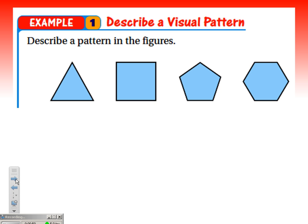As we look at this first example, they give us four figures and we need to describe the pattern that's happening in those figures. We're going to learn about this later in the year, but this first shape is a triangle, and then we've got a square. This five-sided one is called a pentagon, and then six sides, that is a hexagon.